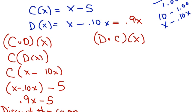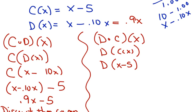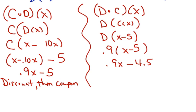Now let's do the other direction. Now let's apply the coupon first. So the coupon was x minus 5, and now I'm going to plug that into my .9 times x. So I get .9x minus whatever 5 times .9 is. It's 4.5. This is if you do the discount, then coupon.